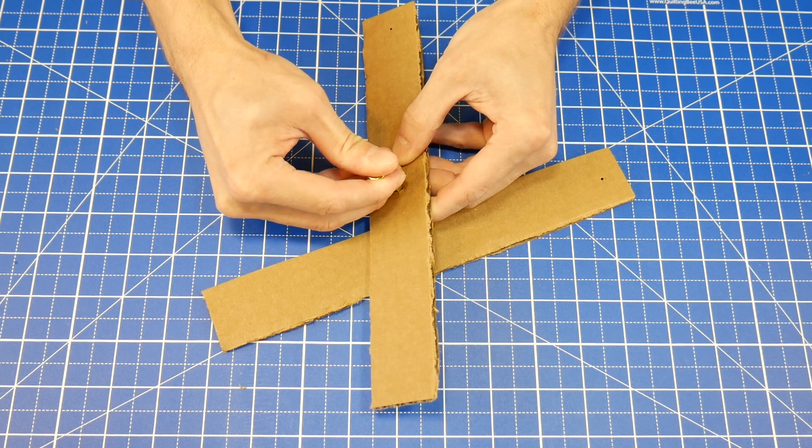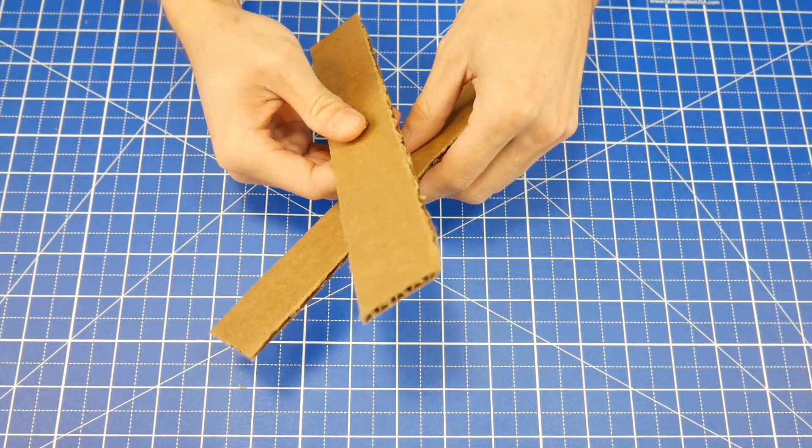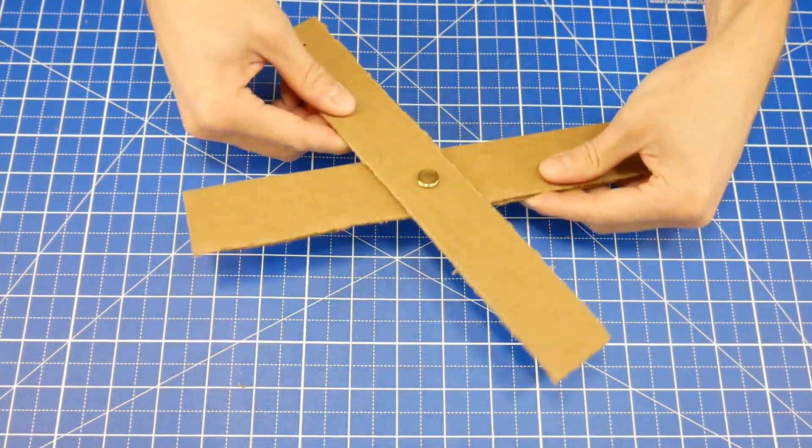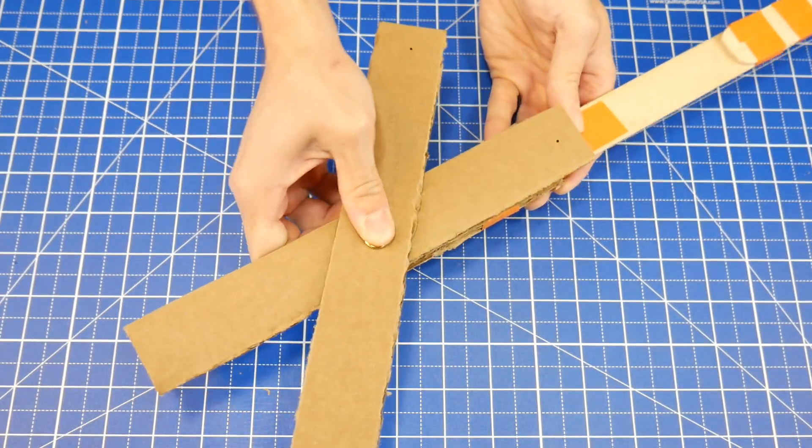Okay, time to put it all together. Insert a metal fastener through the center of these pieces, like this. As you complete this step, be careful not to bend or damage the cardboard. Then insert the fastener through the cardboard piece that's attached to the handle.